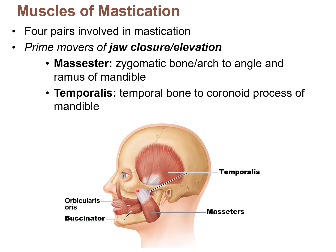When the masseter contracts and shortens, it elevates — or closes — the jaw. The other prime mover is the temporalis, a muscle on the temporal bone. It's a convergent muscle with a very broad origin, with fascicles that all converge onto a part of the mandible. The temporalis inserts onto the coronoid process — not the condyle that forms the TMJ joint. When the temporalis contracts, it pulls up on the jaw via the coronoid process to close the jaw.